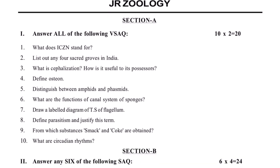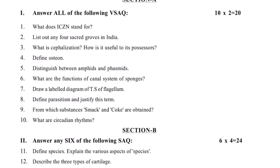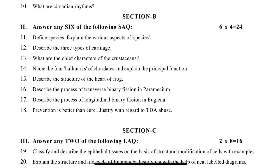So now, for the first paper, two mocks — in the fourth lesson we have to take a look at the hallmarks of chordates. Chordates is the first part, and the second part is the heart of frog. There is a transverse binary fission in Paramecium, and a longitudinal binary fission in Euglena. So this covers four questions.